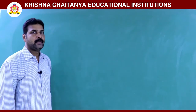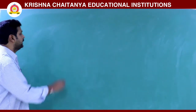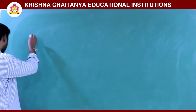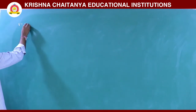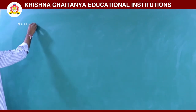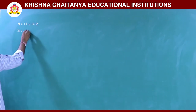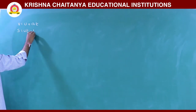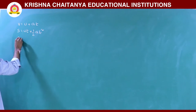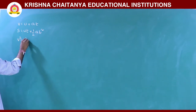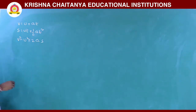Hi students. In the earlier class, we discussed about the equations of motion and derived V = u + at, S = ut + ½at², and V² - u² = 2as.